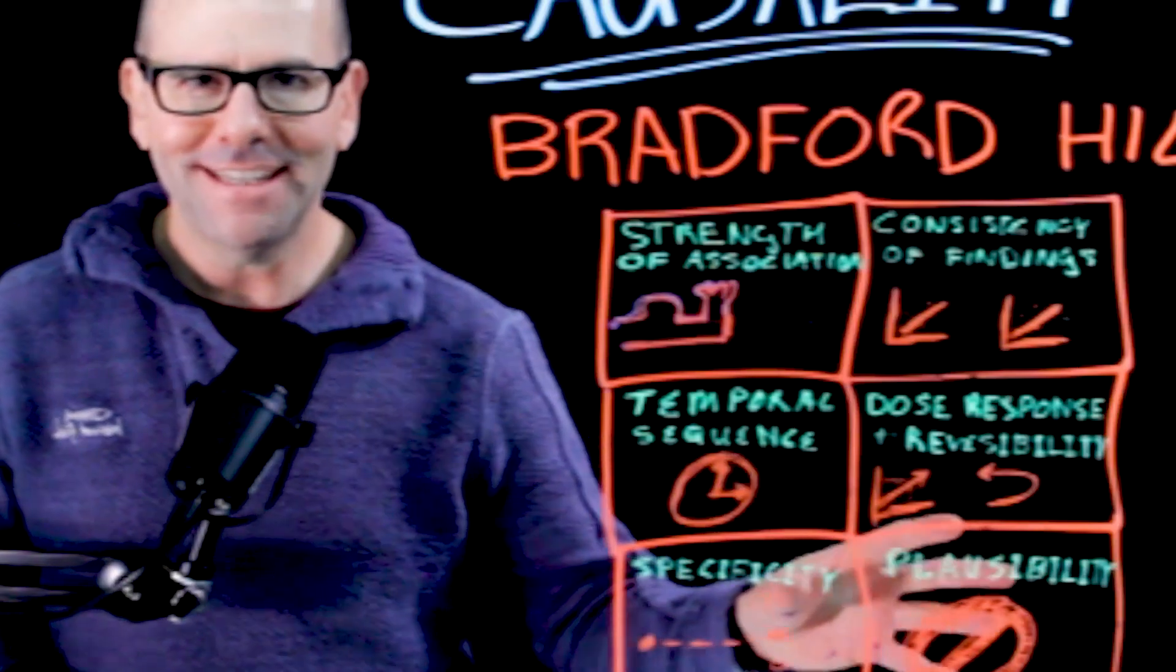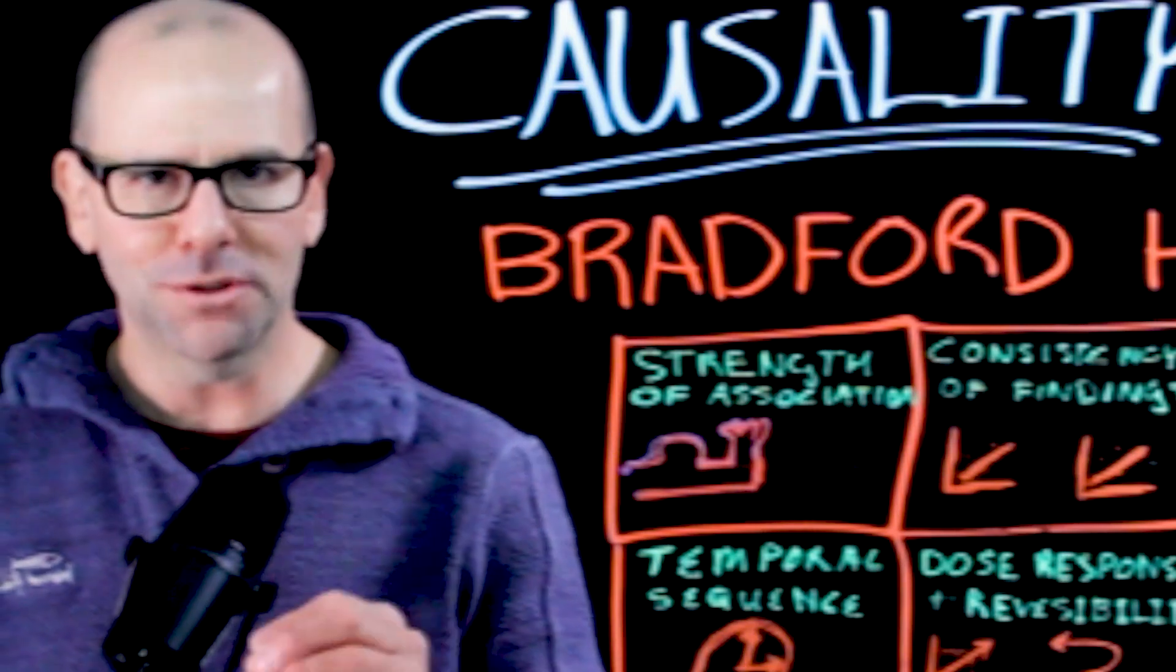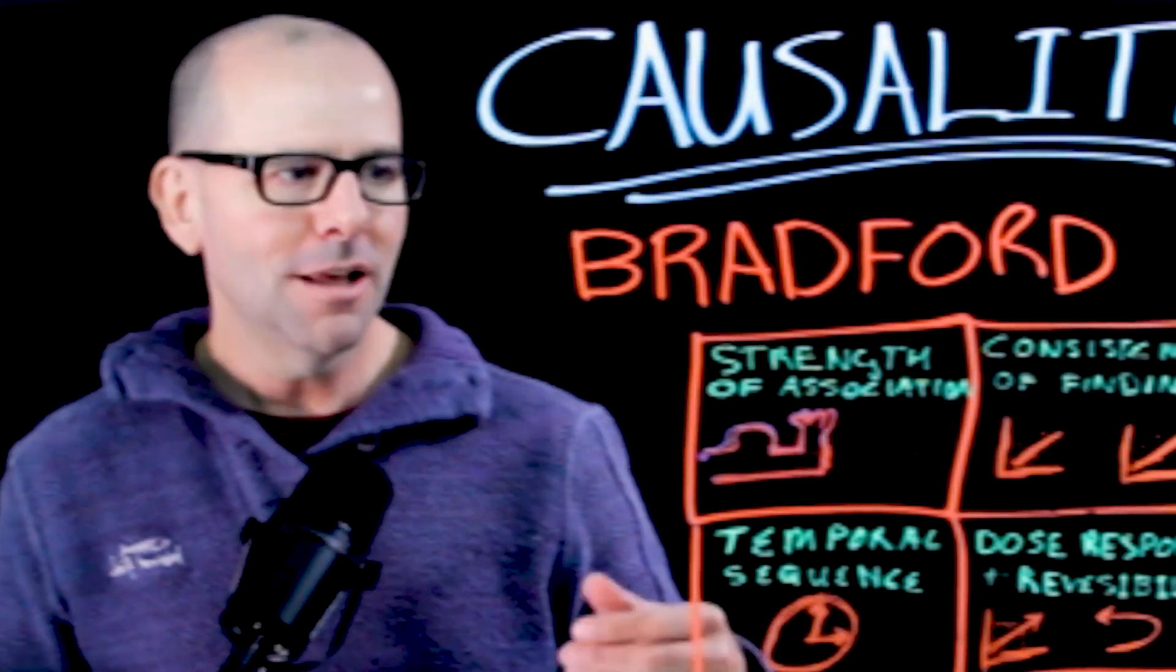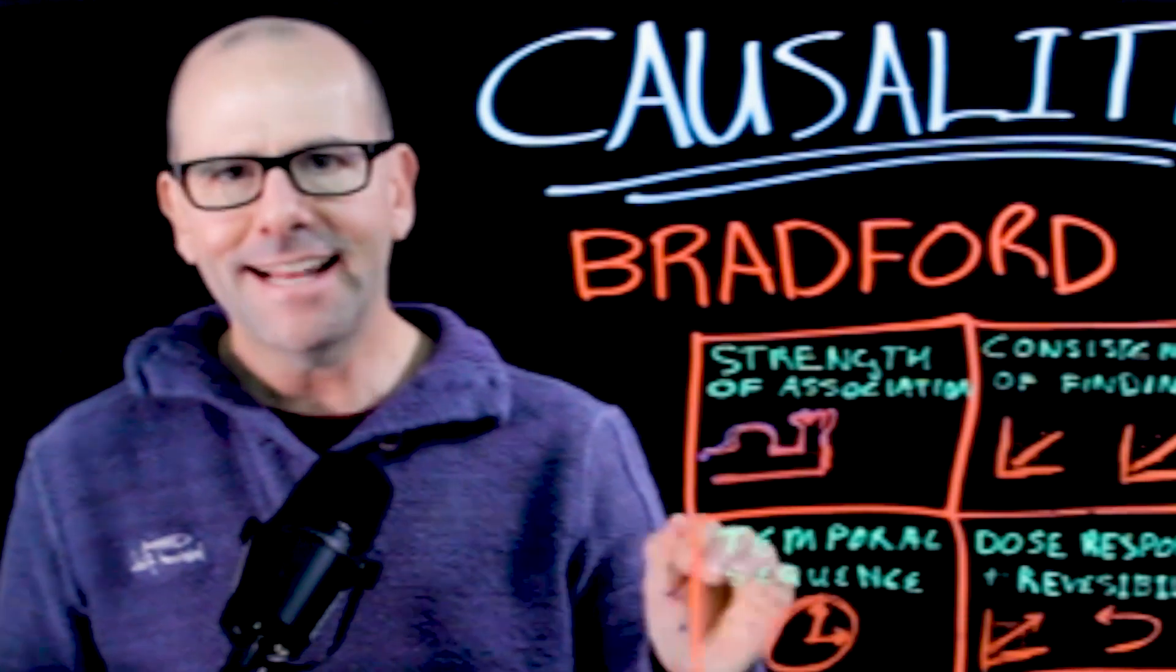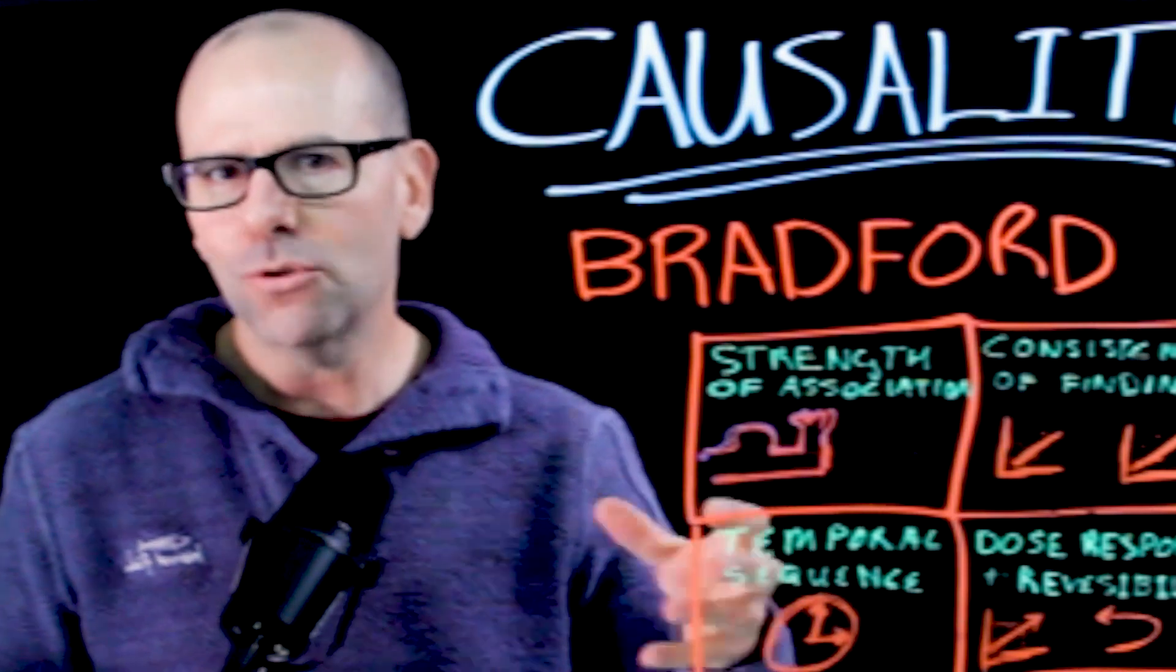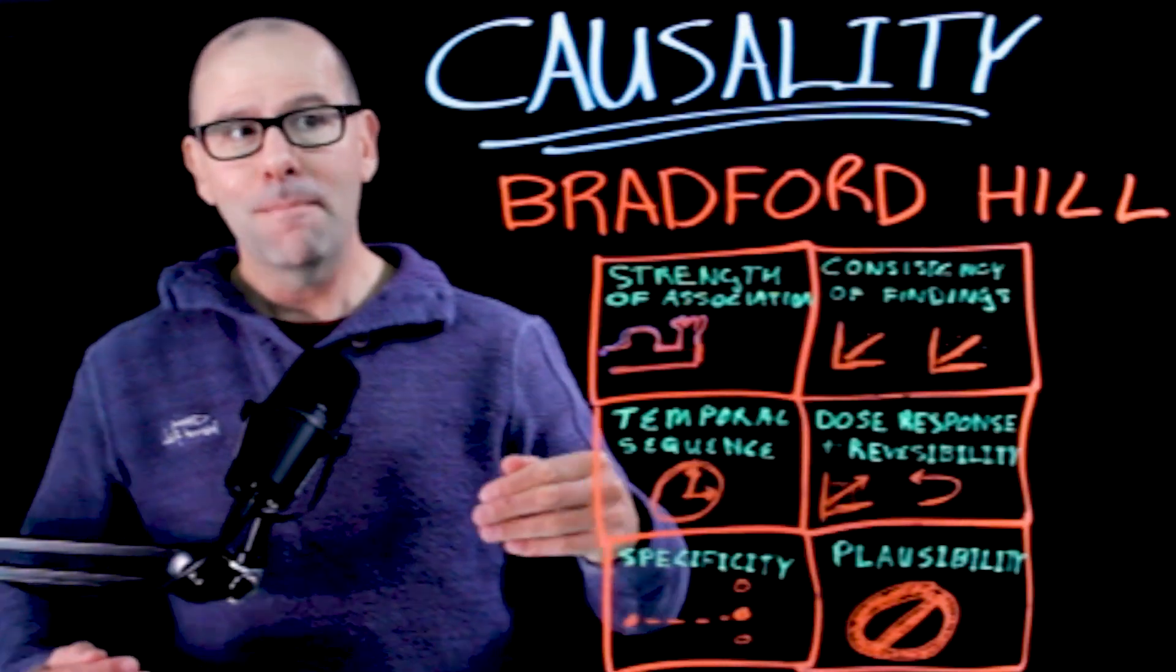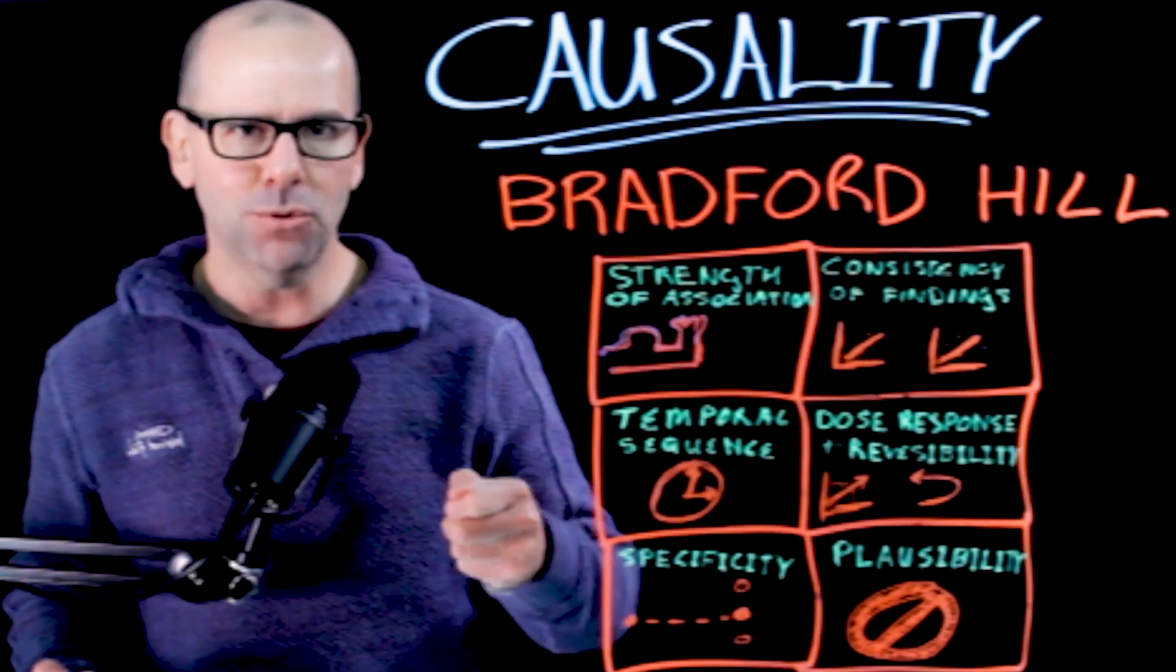And plausibility is only useful when the counterfactual seems to be the case. In other words, when a relationship is completely implausible and we can say, look, there's clearly not a causal relationship here. For example, the crowing of the cock in the morning does not cause the sun to rise. It's not plausible. So we can rule out that causal relationship. So plausibility is basically just saying this relationship is possible in some sense. It's not really a strong indicator that this is necessarily causal.